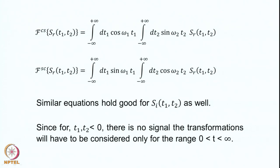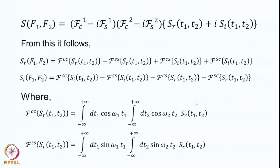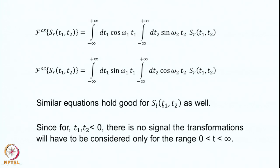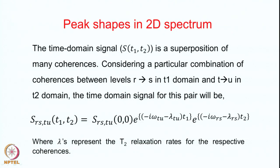Similar equations can be written for the imaginary part S_I(T1,T2). Note that the FIDs have no signal for time less than zero, so the Fourier transformation integrals need only be considered for the range 0 < T < ∞. That completes the formalism for the Fourier transformation — those are the definitions.